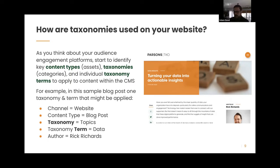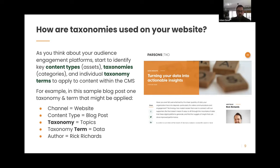Looking at a blog post about turning data into actionable insights, you can start to infer taxonomies even without back-end access. You can identify: channel (this is the website), content type (this is a blog post), and topic (this is about data). Content type doesn't have to be limited to your CMS definition — when we think of taxonomies for content type, we think of the various combinations and presentations of your information to audiences online and offline.